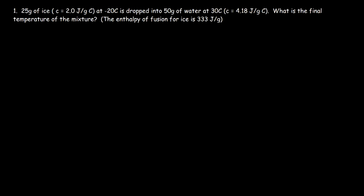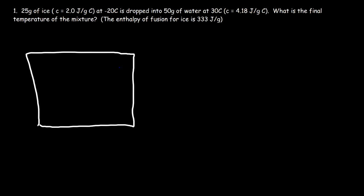In this video, we're going to talk about how to determine the final temperature of an ice-water mixture. In this example, we have 25 grams of ice dropping into 50 grams of water. Here's a visual. This is liquid water at 30 degrees Celsius, and then we have an ice cube dropped into it at negative 20. Because the water is at a higher temperature than the ice cube, heat is going to flow from the water to the ice cube.